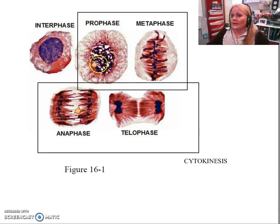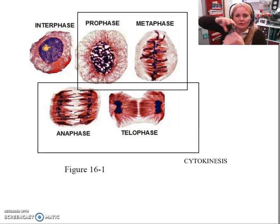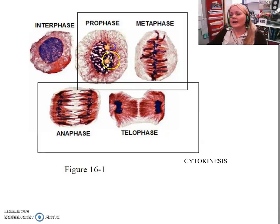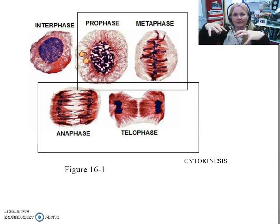One of the first things that has to happen is that the DNA — these long twisty double helixes — have to twist up more, corkscrewing until they're shorter and fatter and easier to manage. Otherwise they get all tangled. They shorten and thicken, then the nuclear membrane surrounding the nucleus dissolves, and spindle fibers come in and attach themselves to the chromosomes.